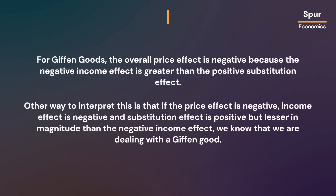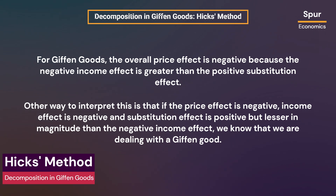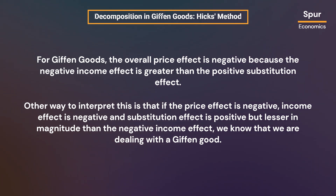For Giffen goods, the overall price effect is negative because the negative income effect is greater than the positive substitution effect. If the price effect is negative, income effect is negative, and substitution effect is positive but lesser in magnitude than the negative income effect, we know that we are dealing with a Giffen good.